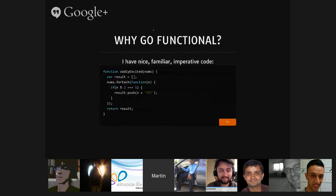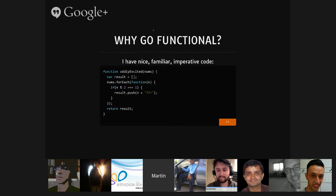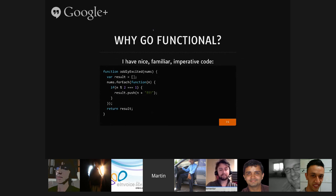The first thing many people ask is: why should we go functional? Why should we use functional programming? Here's a familiar imperative example — a function that returns odd numbers. It receives an array of numbers, creates a results array, iterates over all the numbers, checks if each is odd, and if so adds that number plus exclamation marks to the results object. That means the result object is mutating on every iteration. This works perfectly in JavaScript because JavaScript is single-threaded — no concurrency.